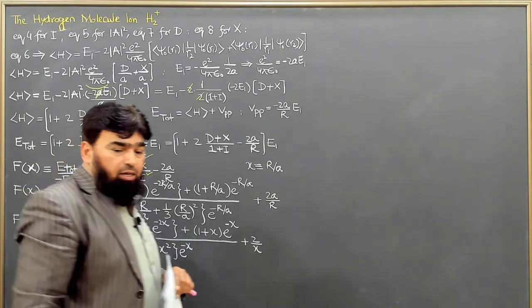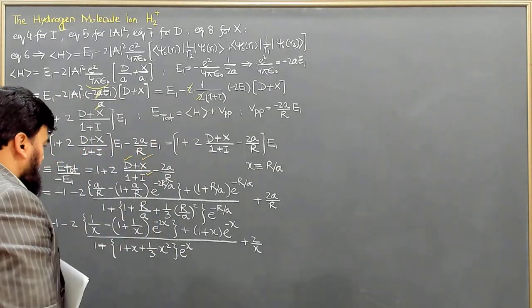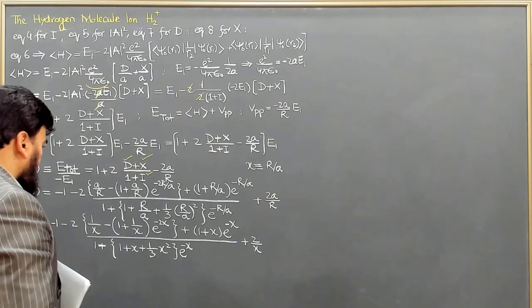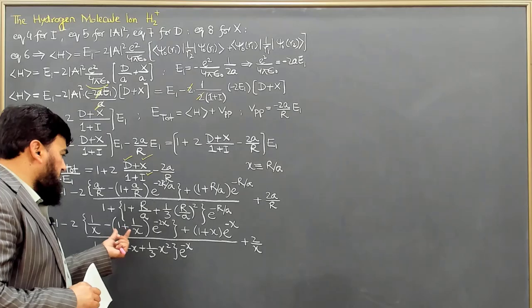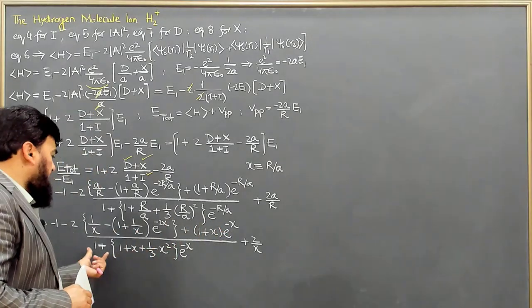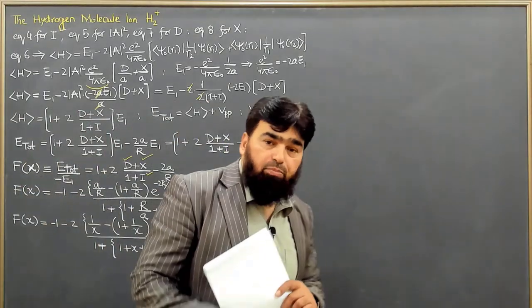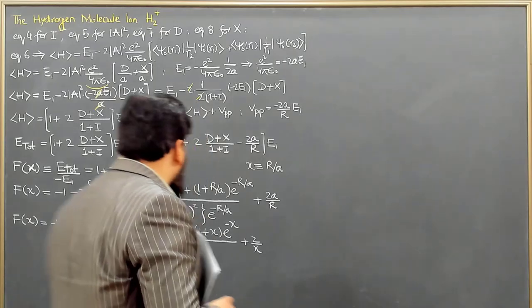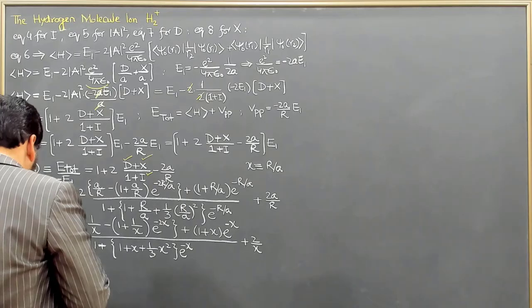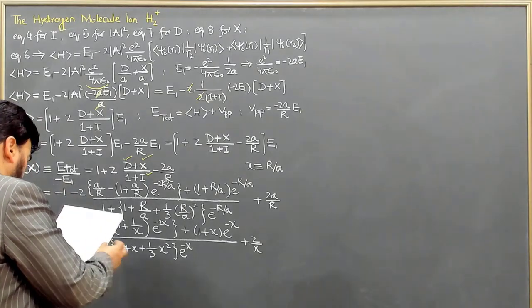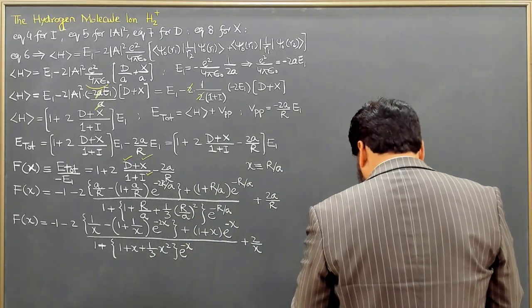Now we will have to simplify this thing, and its simplification is not difficult. We are having 1 over x here; this term will multiply with this, similarly this will multiply. We will multiply this term, and there is a step-by-step explanation. I have done this explanation in the lecture notes, and you can follow the lecture notes for the simplification.